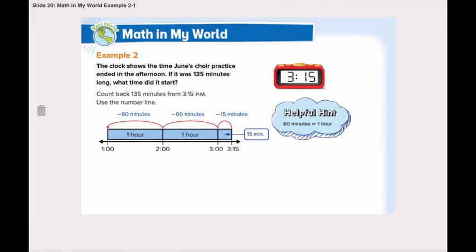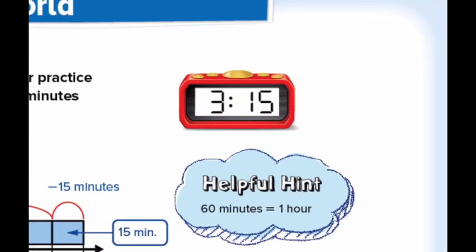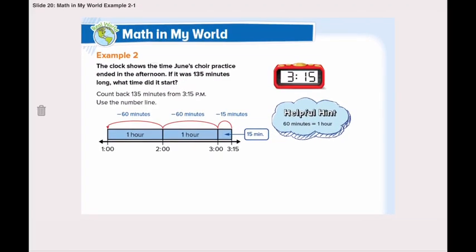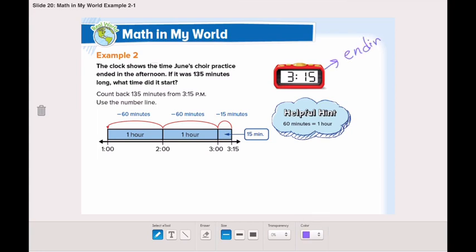The clock shows the time June's choir practice ended in the afternoon. This is the ending time, which is 3:15 or 15 minutes past 3. If it was 135 minutes long, what time did it start? This is the ending time. Do we know the starting time? No. Starting time is unknown.